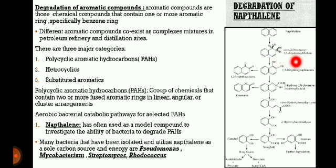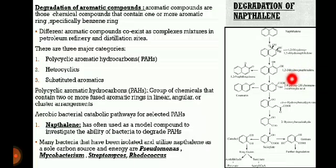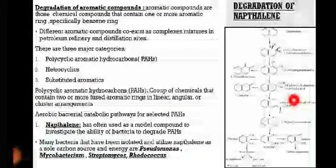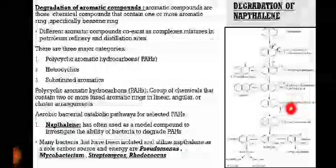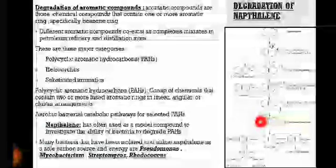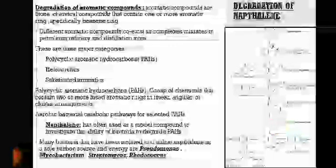To summarize the figure: naphthalene is first converted into cis-1,2-dihydroxy-1,2-dihydronaphthalene in the presence of naphthalene dioxygenase, then forming 1,2-dihydroxynaphthalene, 2-hydroxy-2H-chromene-2-carboxylic acid, and cis-o-hydroxybenzalpyruvate products. Then 2-hydroxybenzaldehyde products are formed, and catechol forms salicylate. Further degradation involves ring fission via the meta and ortho pathways.